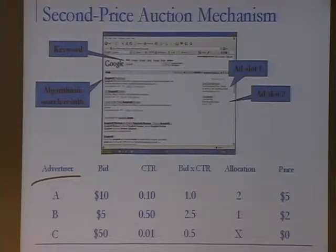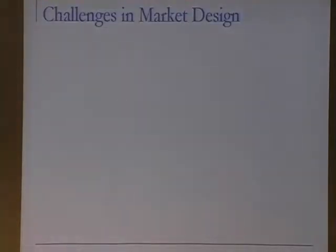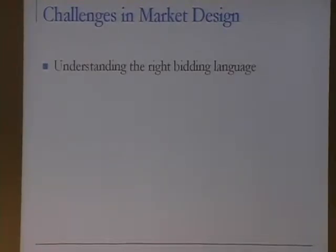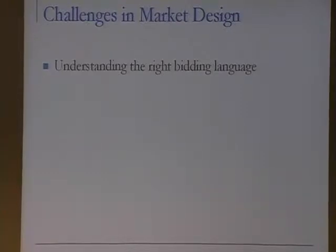This is the general framework I'll explore, and there are many challenges introduced by this market design. First, we need to think about the right bidding language for advertisers. Currently we ask advertisers how much they value each click and what their maximum budget is. Should we allow more expressivity? Google is now allowing advertisers to bid on which slot they want, which makes the language more expressive but may introduce complications and reduce auction transparency.